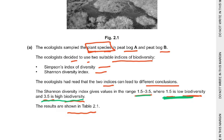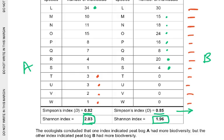The Shannon index values are 2.03 for A and 1.96 for B, so by Shannon, A has higher biodiversity. But by Simpson's index, B (0.85) is higher than A (0.82), meaning less biodiversity for A. So there is a discrepancy between the two indices.